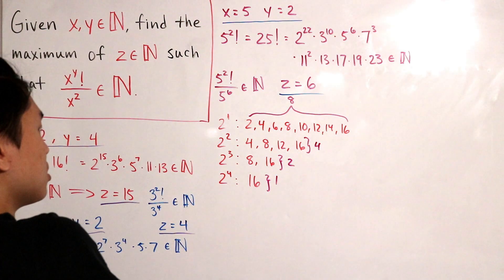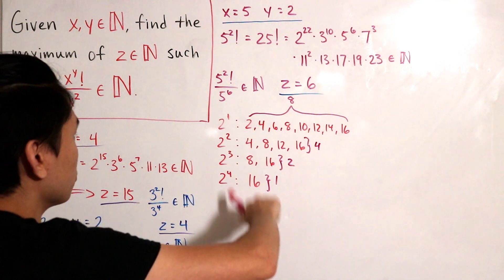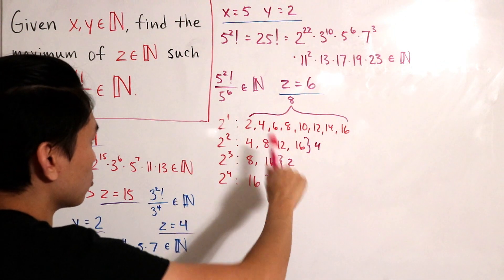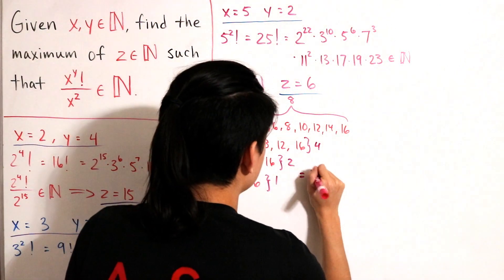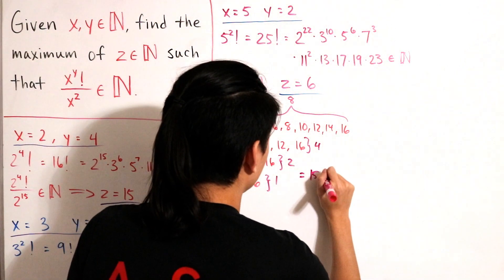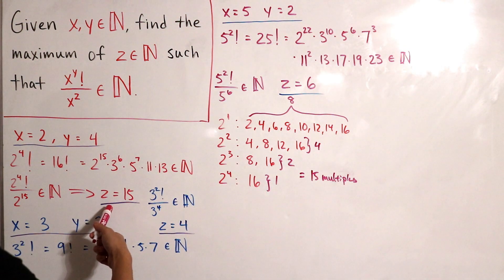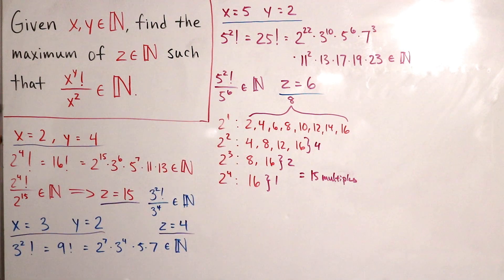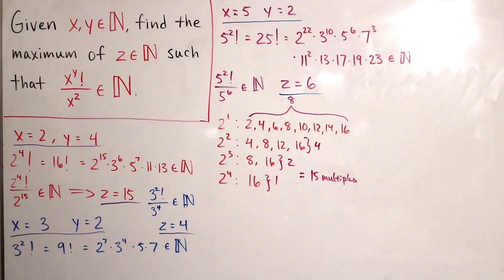If we add up the multiples for each power — 8, 4, 2, and 1 — we get a total of 15 multiples. Notice that's exactly what z equals. So there's a direct correlation between the total number of multiples and the value of z. That's our key observation for the x equals 2, y equals 4 case.